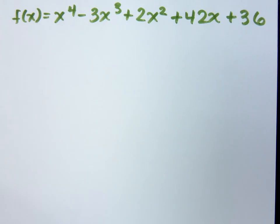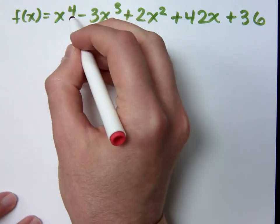How many zeros do I expect to find from this polynomial? How do you know? Four. It tells you this guy right here.